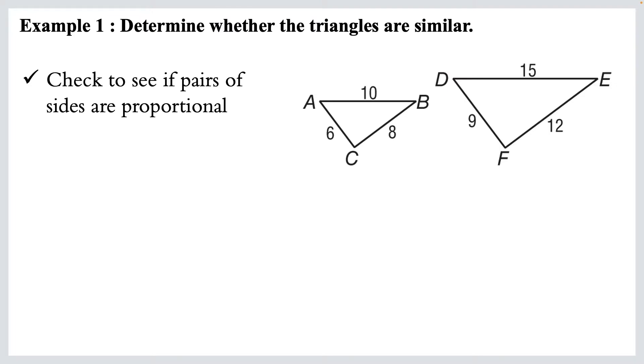This says, determine whether the triangles are similar. So first, we're going to check to see if pairs of sides are proportional. We don't have any angles, so we're just checking sides here. We're going to find the matching sides. So six matches up with nine. So that's AC partnering with DF, six over nine. That reduces to two over three. Okay, so that's one set.